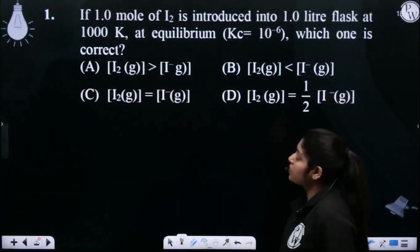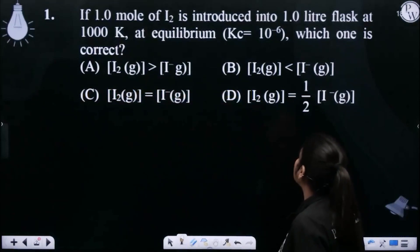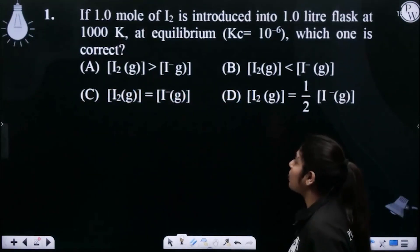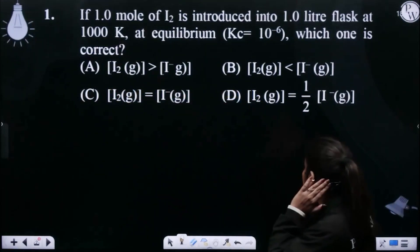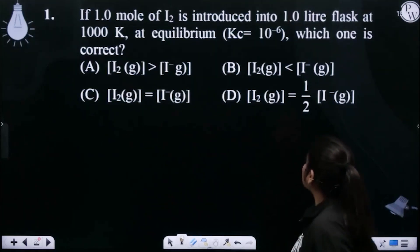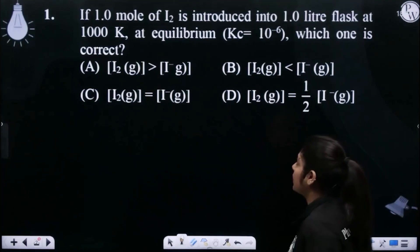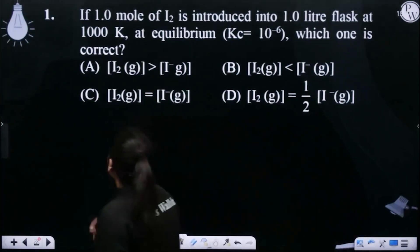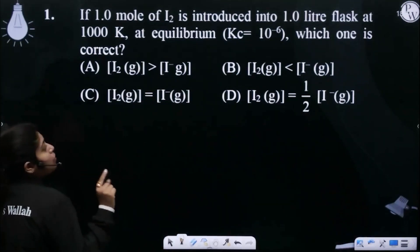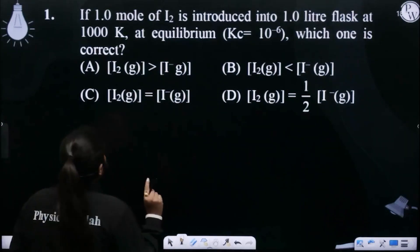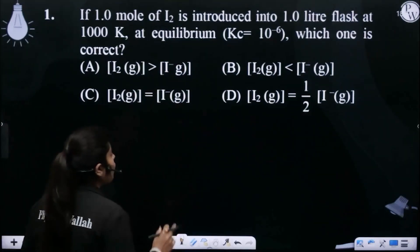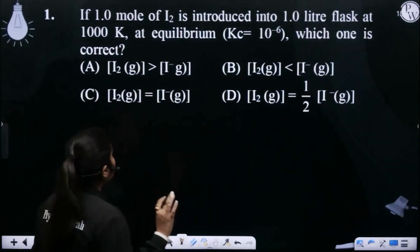So the first question says: if one mole of I2 is introduced into a 1 liter flask at 1000 Kelvin at equilibrium, for the reaction Kc is given 10 to the power minus 6, which one of the options is correct? So what do we say? That one mole of I2 is introduced in a 1 liter flask and the temperature is given, and for this reaction the equilibrium constant is given.